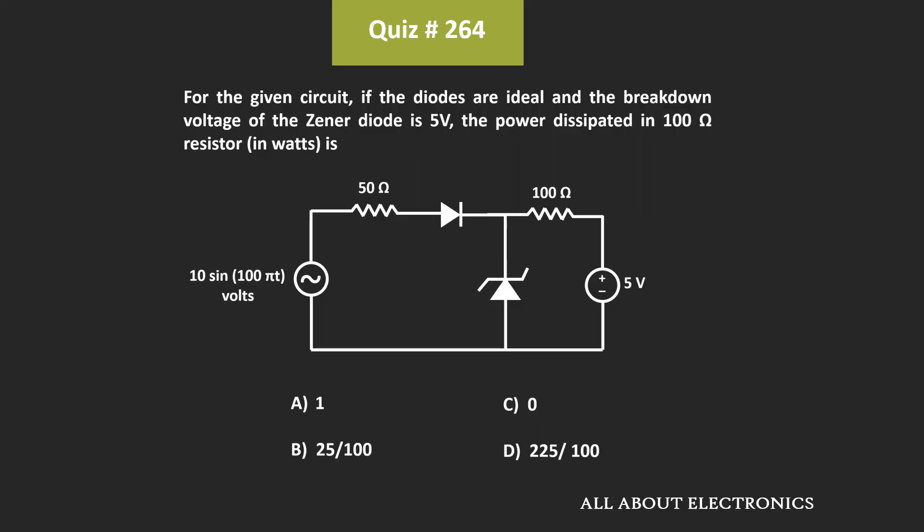Hey friends, welcome to the YouTube channel All About Electronics. In this question, we have been given this circuit and we have been asked to find the power which is getting dissipated across this 100 ohm resistor.